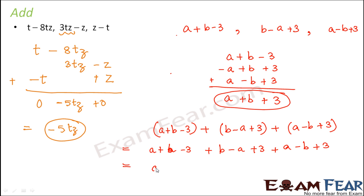Now let us put all the a's together. So a plus a minus a. This would be together. Plus b plus b minus b. All the b's together. And then minus 3 plus 3 plus 3. So 3 is together.